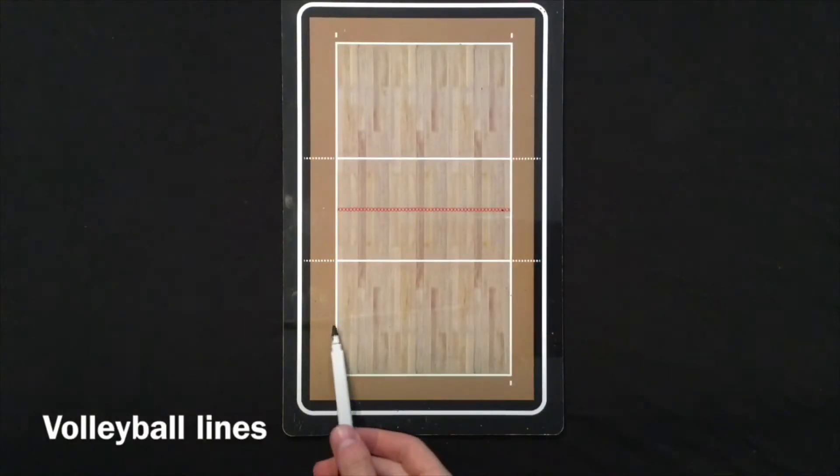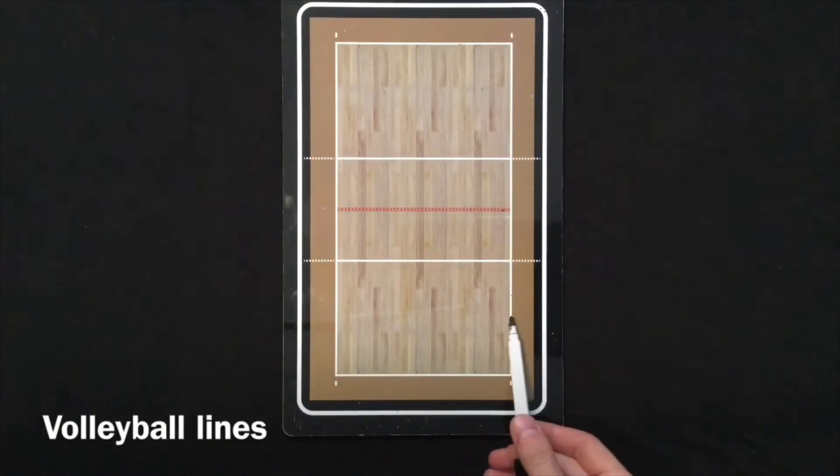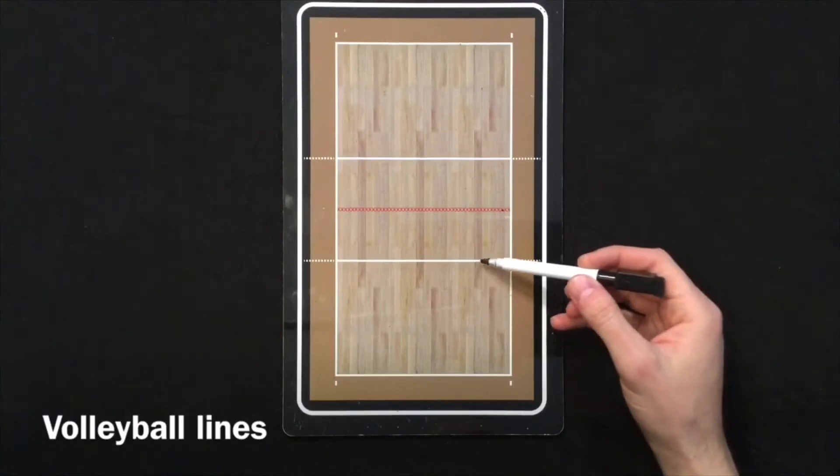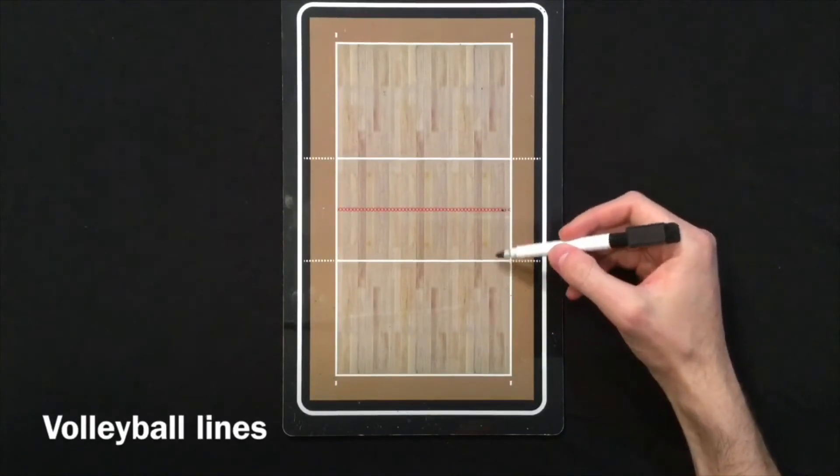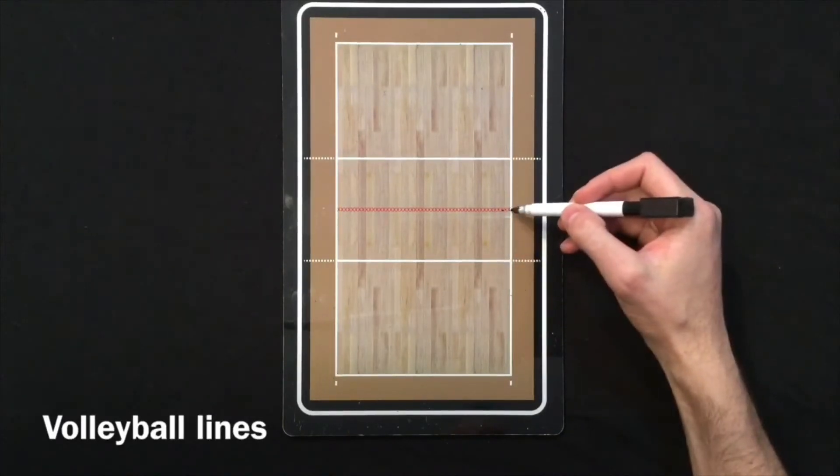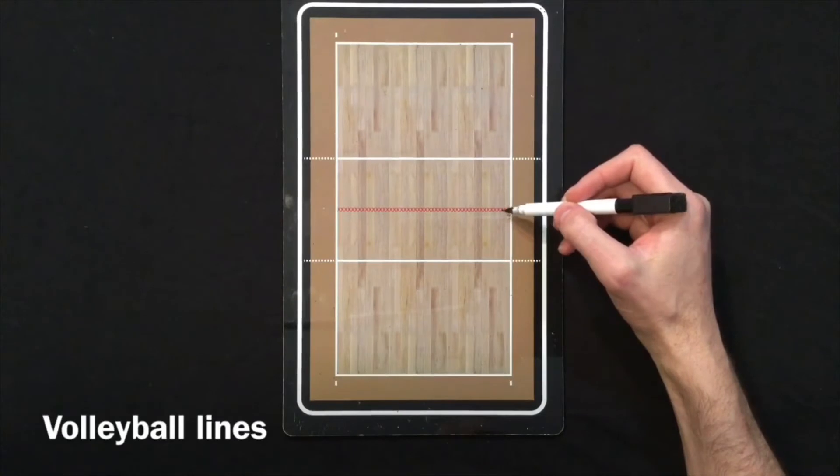We have the sidelines, again two. We have the ten foot line or three meter line, signifying it's ten feet or three meters away from the net or this last line called the center line.